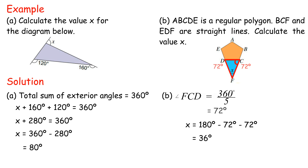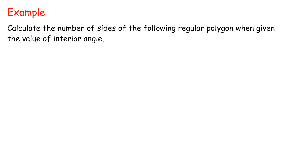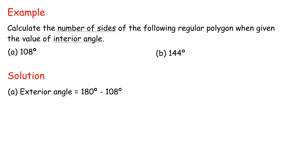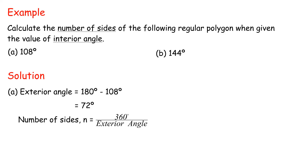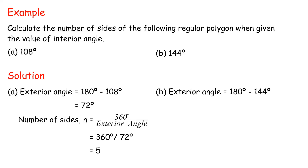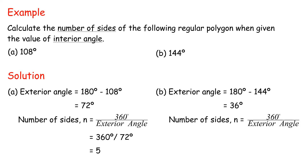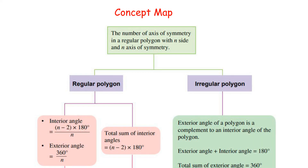Calculate the number of sides of the following regular polygon when given the value of the interior angle. A. 108 degrees: Exterior angle equals 180 minus 108, equals 72 degrees. Number of sides N equals 360 divided by 72, equals 5. B. 144 degrees: Exterior angle equals 180 minus 144, equals 36 degrees. N equals 360 divided by 36, equals 10. The concept map for Form 2 Chapter 4 is shown below.